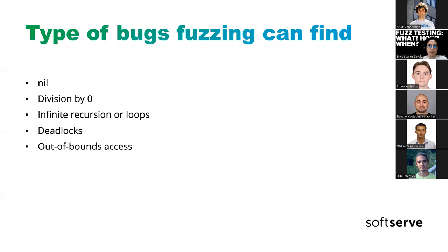The types of bugs that fuzz testing can help you find are nils, division by zero, infinite recursion or infinite loops, and also deadlocks and out-of-bound access.